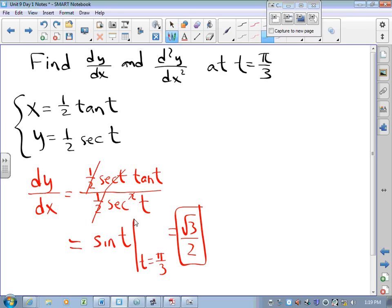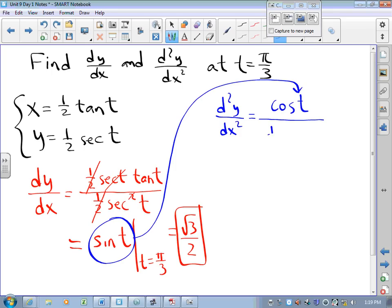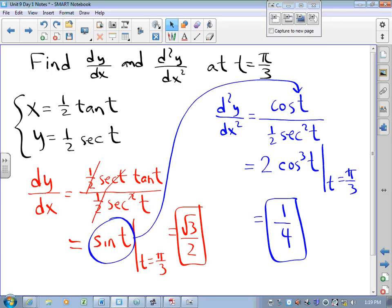If I'm interested in the second derivative, the second derivative of y with respect to x is the derivative of this thing with respect to time divided by the dx/dt that we had from before. This without too much playing around is 2 cosine cubed t. We evaluate that at pi over 3 and we get one fourth. So dy/dx very easy to find, second derivative with respect to x not that much harder to find.